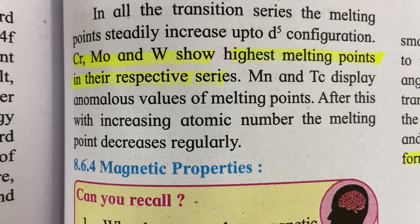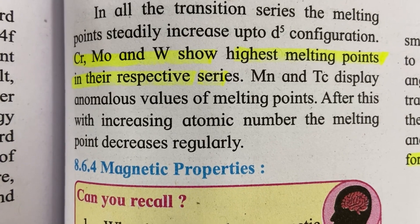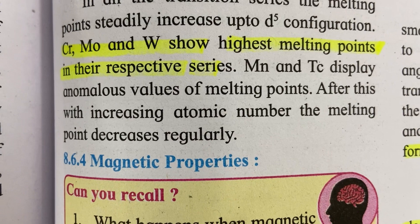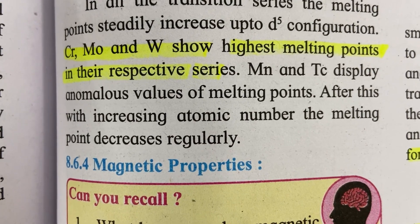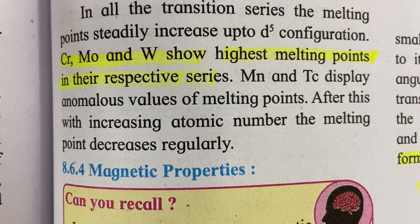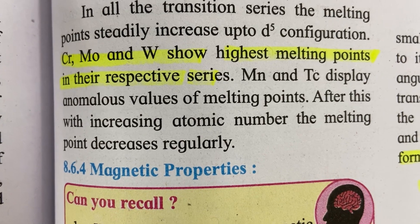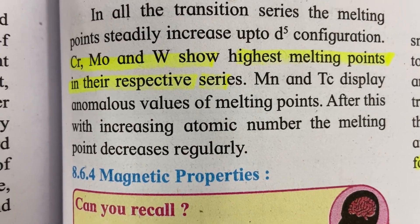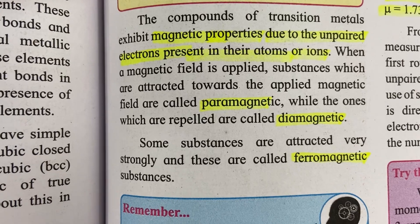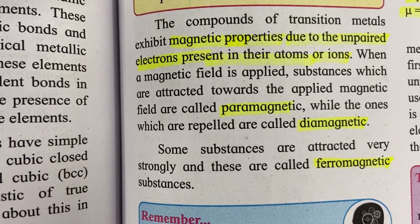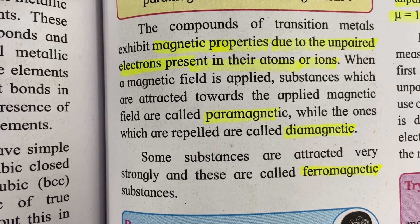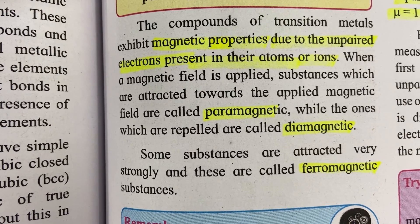Chromium (Cr), molybdenum (Mo), and tungsten (W) show the highest melting points in their respective series — Cr in the 3d series, Mo in the 4d series, and W (tungsten) in the 5d series.